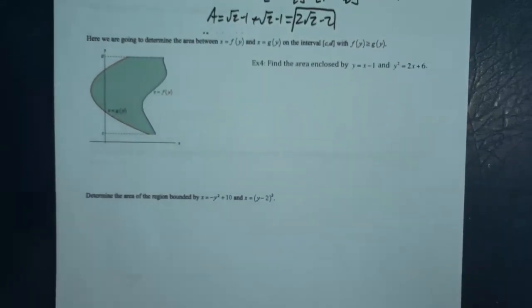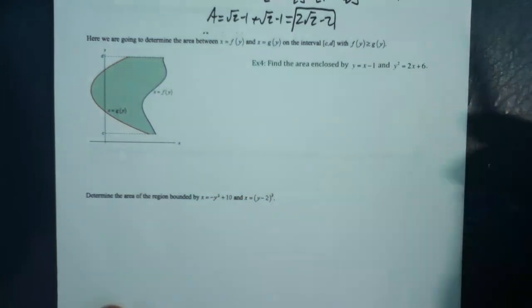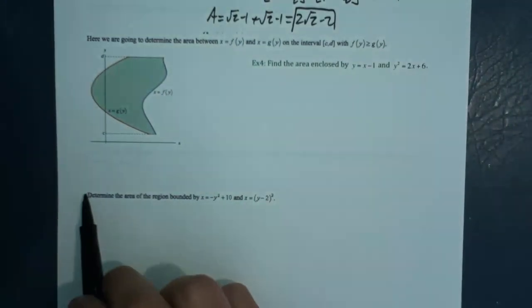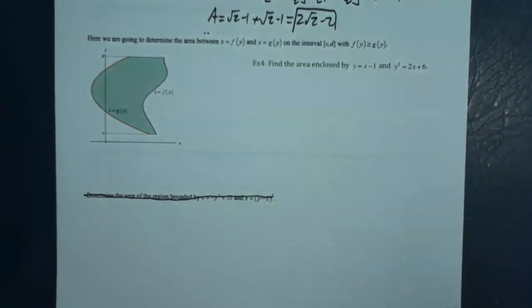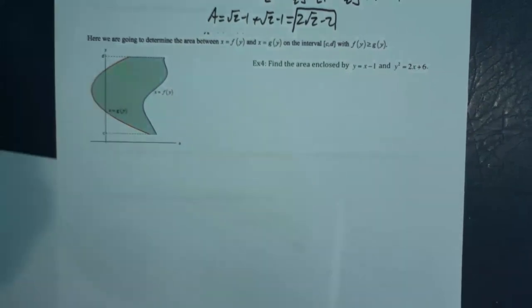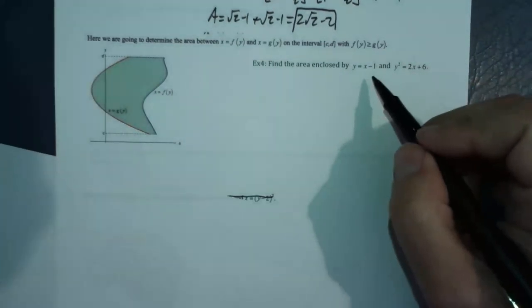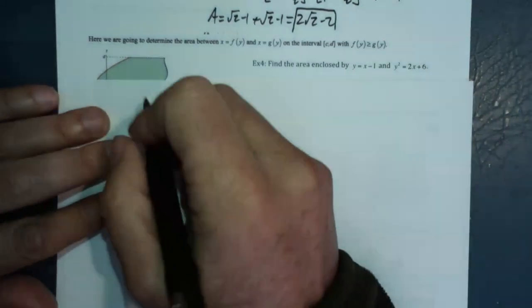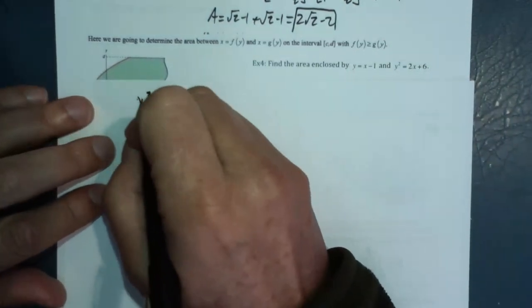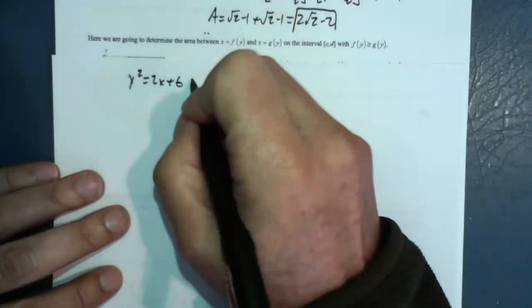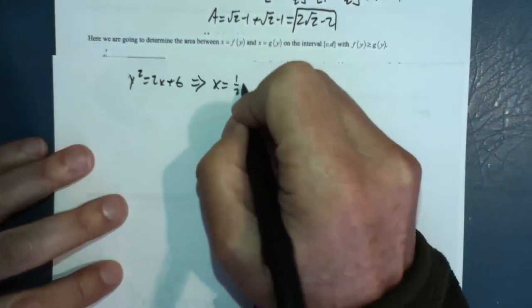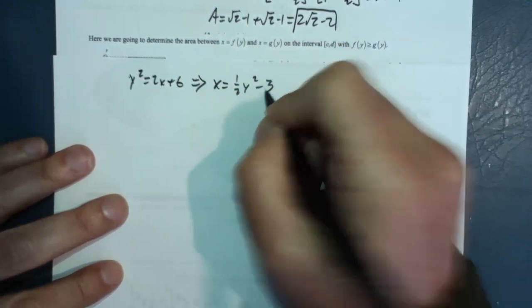We mentioned before that we might have x as a function of y, which is what we have for the next example. We're not going to complete this example in this video — we just need to do some analysis first. One function is a straight line, no problem. The other is more involved: y squared equals 2x plus 6, which becomes x equals one-half y squared minus 3.